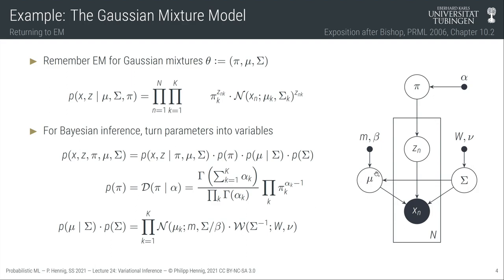That joint distribution equals the likelihood we already have, times priors for those variables. We get to choose what those priors should be. A good design idea is to choose priors from the exponential family — specifically conjugate priors for the kinds of observations we make in this likelihood.